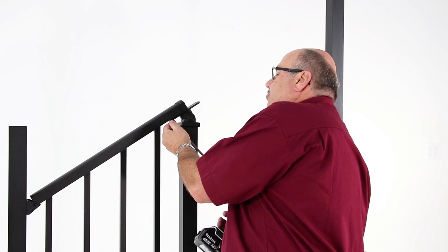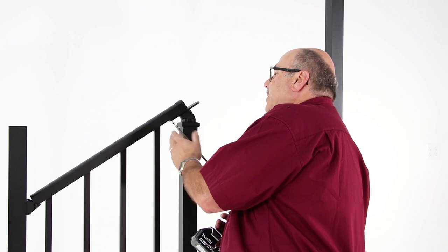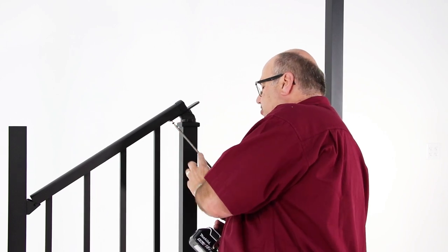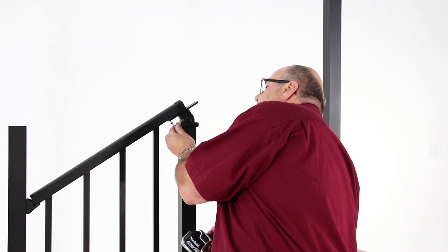We're now ready to install the top rail onto the stair crossover. The angle is set. I have one screw in place already. You notice my long bit—it's a lifesaver in this application. Number two square head.